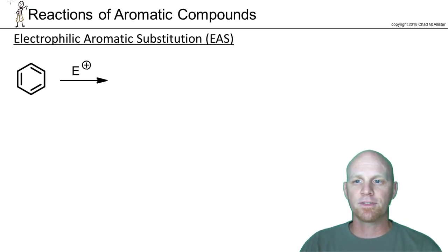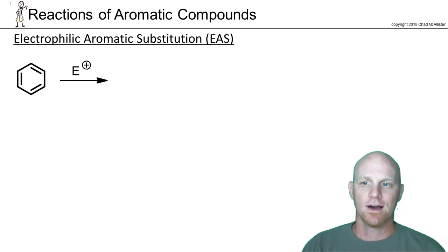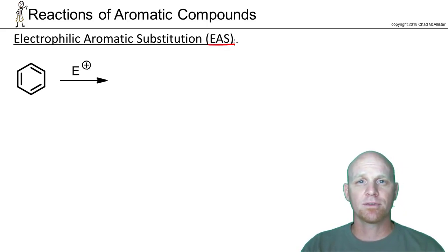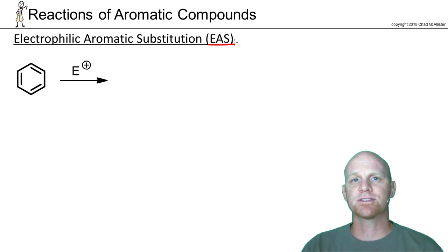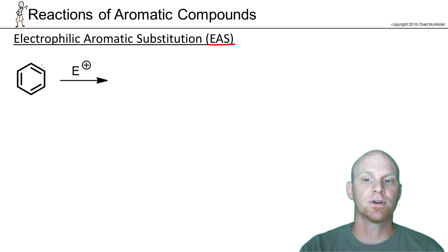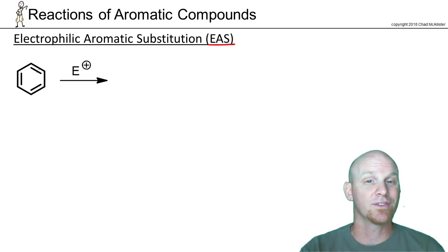We're going to start by looking at the general mechanism for electrophilic aromatic substitution, sometimes called EAS. The general mechanism is just two steps — we'll find it's a little more complex with specific reactions, but in general it's nucleophilic attack followed by deprotonation. Benzene is pretty stable, so it's not the greatest nucleophile, which means we have to have an amazing electrophile.